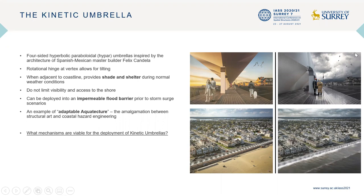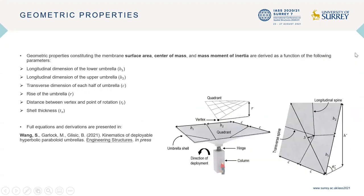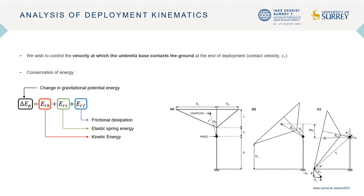This talk will focus on the mechanisms facilitating the deployment of these umbrellas. Before the kinematics of deployment can be analyzed, various geometric properties of the shell — constituting its surface area, center of mass, and mass moment of inertia — need to be derived as a function of its geometry. These geometric parameters are shown on the screen. The derivation of all equations will not be discussed in this talk, but instead are presented in full within our publication in Engineering Structures. The geometric properties are ultimately used to calculate the velocity at which the umbrella base contacts the ground at the end of deployment.